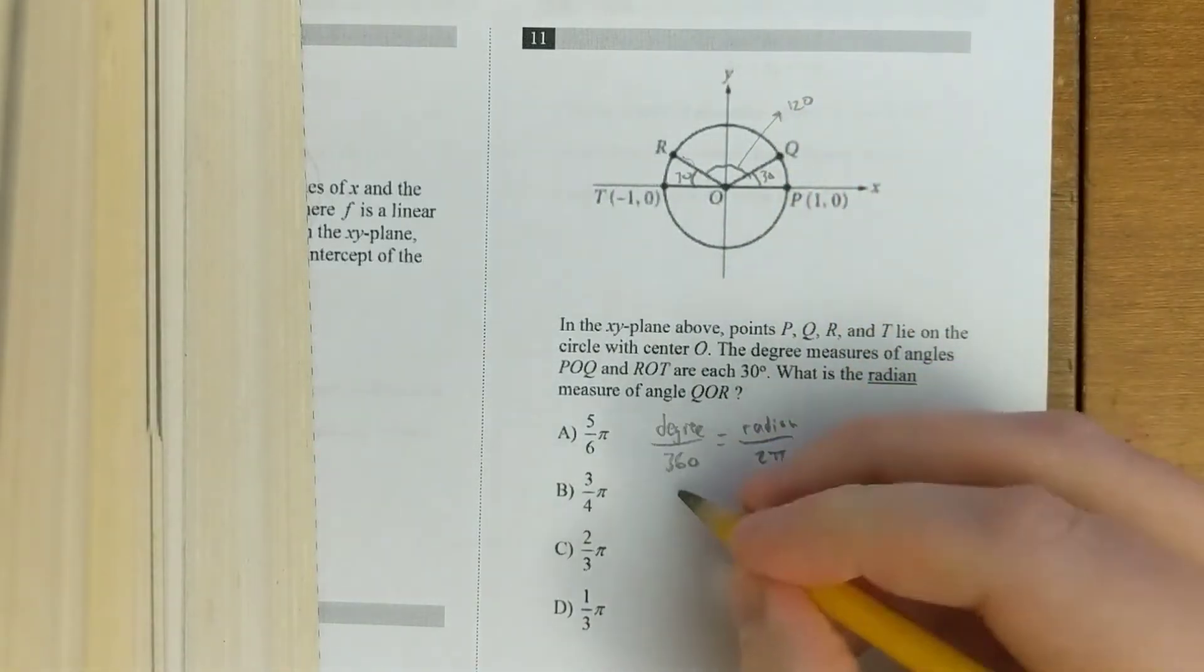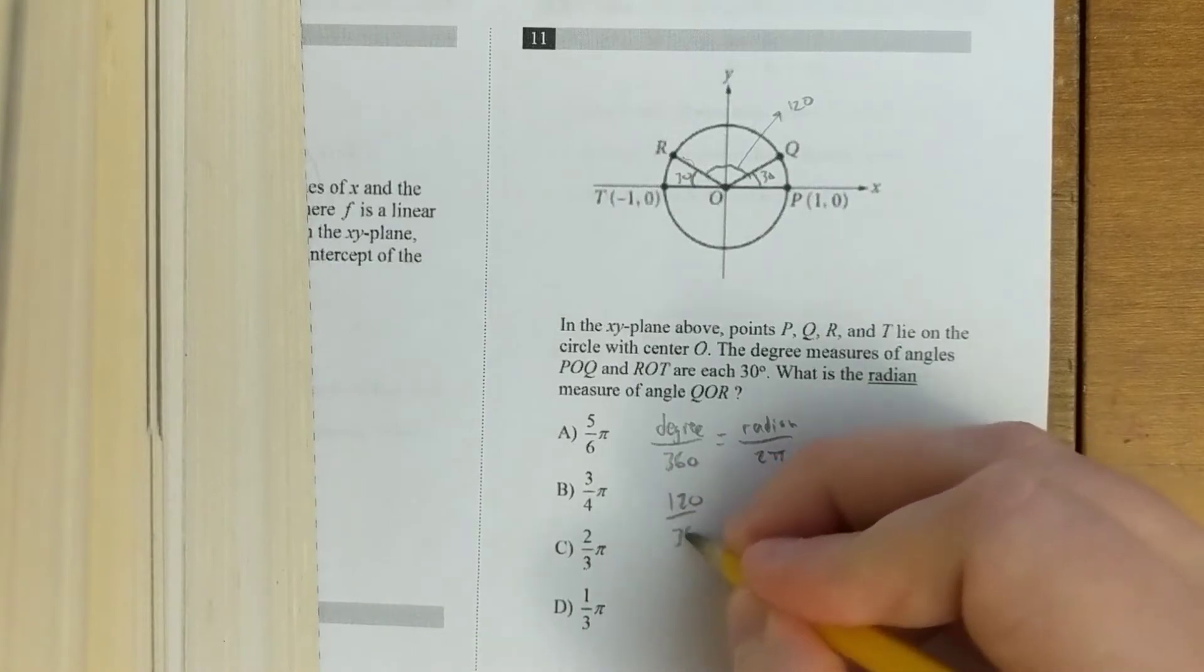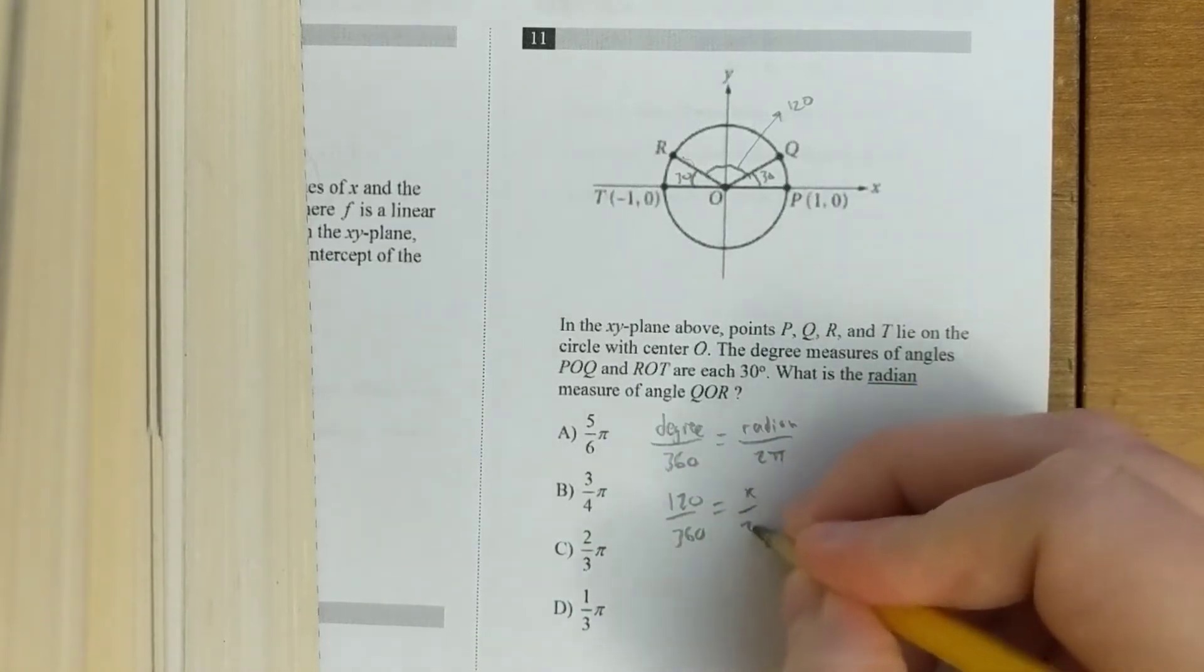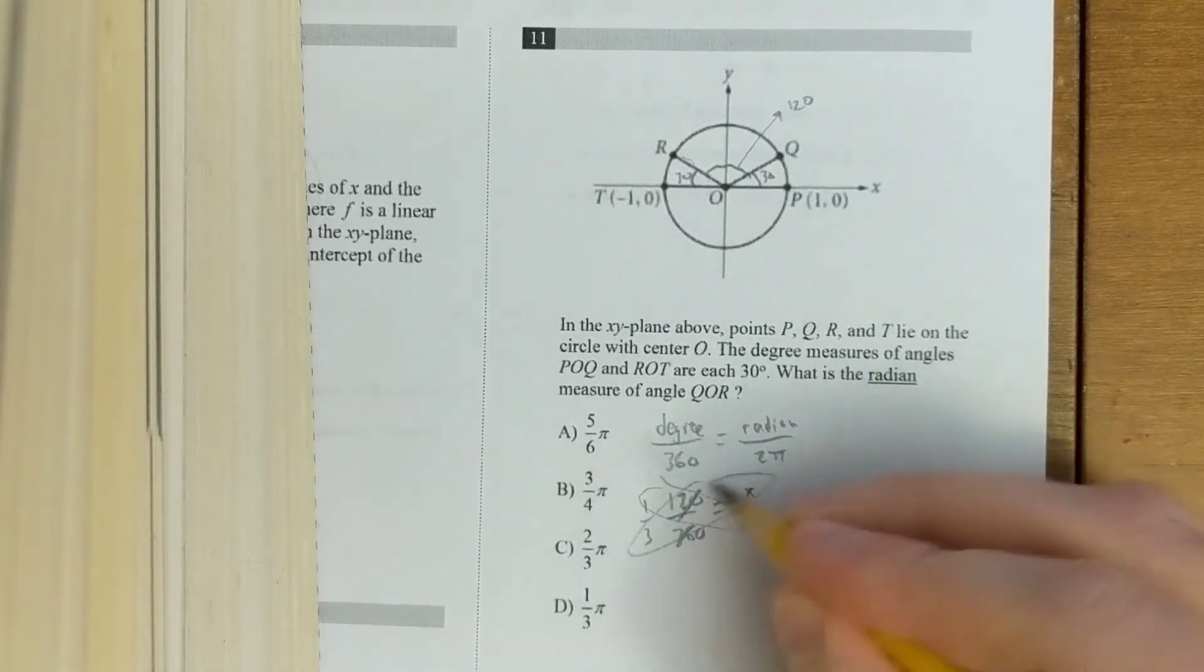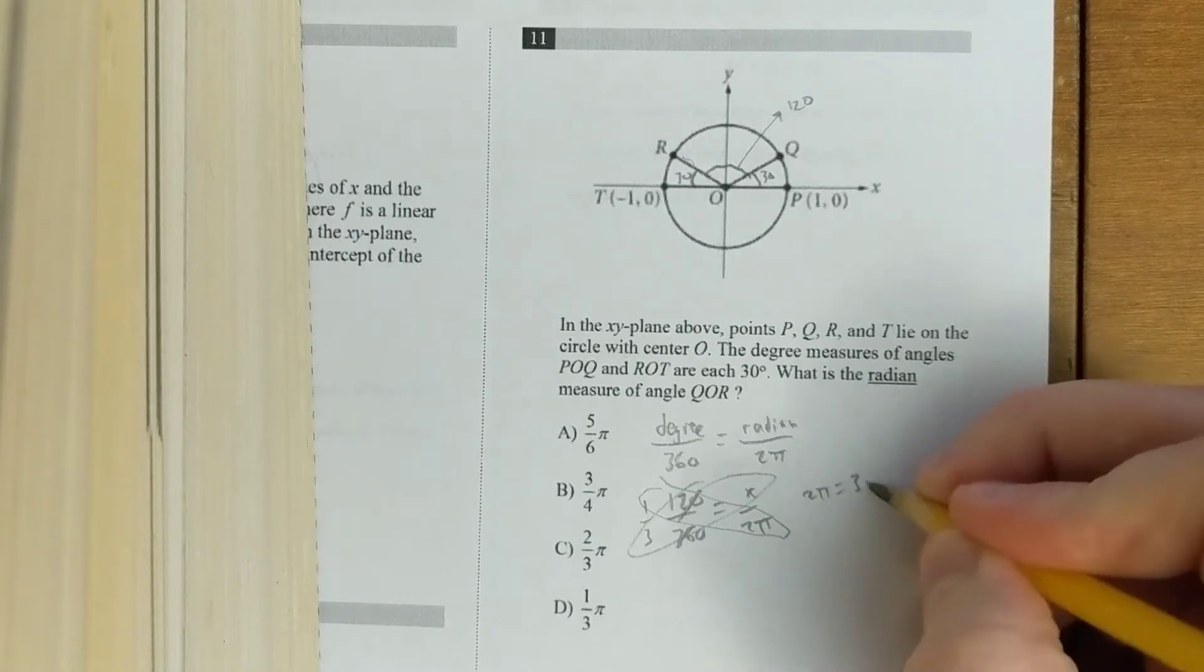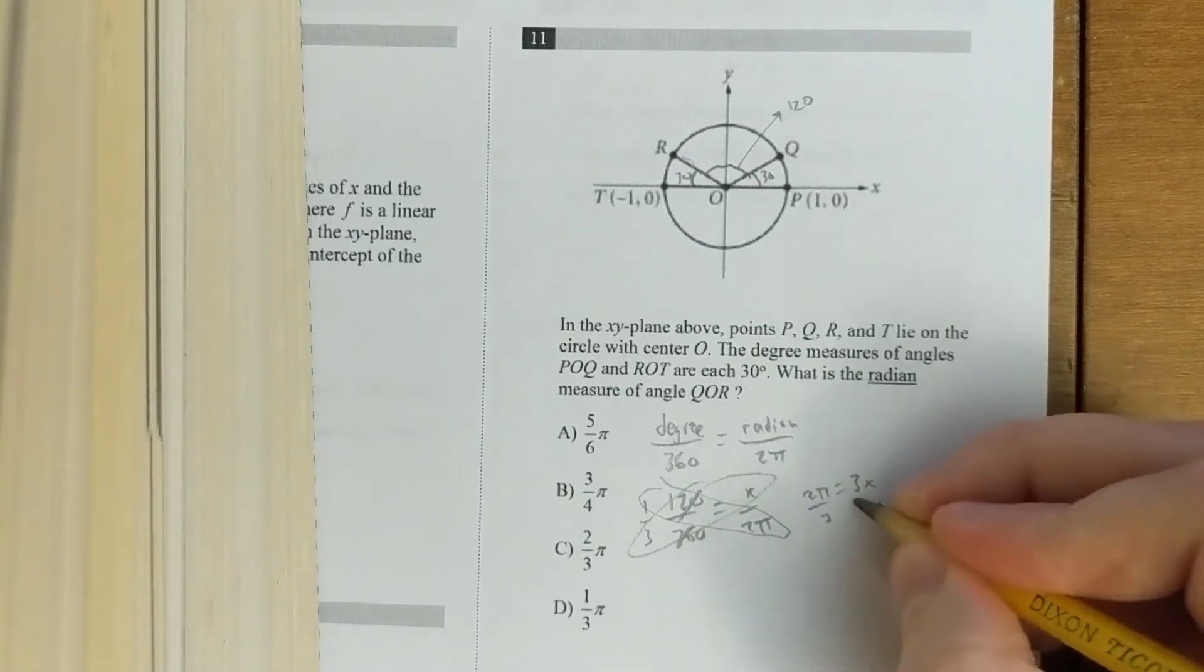So now we just plug it into this proportion. 120 over 360 equals something over 2 pi. We're going to simplify that there, so it's 1 third. Then go ahead and cross multiply, and you get 2 pi equals 3x, divide both sides by 3, and you get 2 pi over 3.